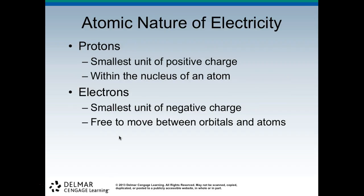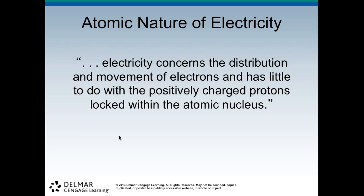When we're talking about electricity, we're talking about the atomic nature of electricity first. We're going to talk about protons and electrons. Protons are the smallest unit of positive charge within the nucleus of an atom, where electrons are the smallest unit of negative charge and they're free to move between orbitals and atoms. It's been stated that electricity concerns the distribution and movement of electrons and has little to do with the positive charges of protons locked within the nucleus.